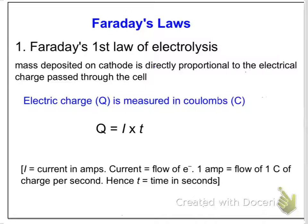Michael Faraday was a very famous scientist working in the 19th century. He did a lot of work towards electrochemistry, also quite a bit of physics. He set up a whole lot of electrolytic cells and pretty much came up with the terms anode, cathode, electrode, and electrolyte. He came up with two laws. The first of them, based on data similar to what we just looked at, states that the mass deposited on the cathode is directly proportional to the electrical charge passed through the cell. The electrical charge, given the symbol Q, is measured in a unit called coulombs, given the symbol C. Directly proportional means as one goes up, the other also goes up — so mass is directly proportional to charge.